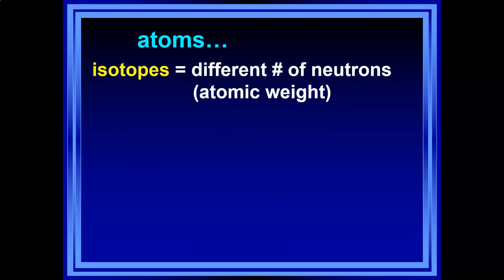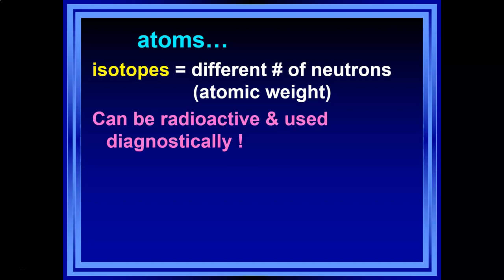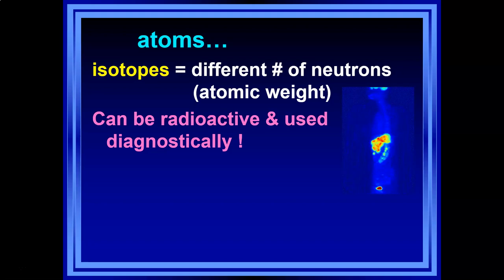The number of protons — atomic number — cannot change. But you can fiddle with everything else: you can change the number of neutrons or the number of electrons. When you change the number of neutrons, you get what are called isotopes. Isotopes have a different number of neutrons but the same atomic number. The reason isotopes are important is they can be radioactive, and sometimes they're used diagnostically — we can determine what's going on with a scan using radioactive isotopes.